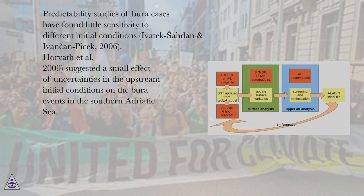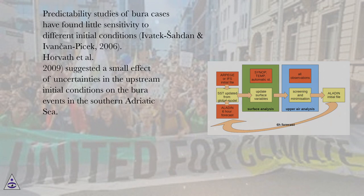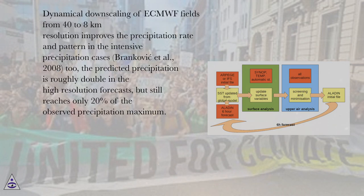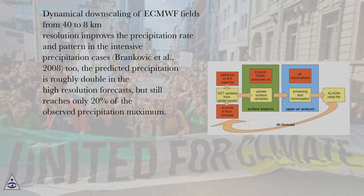Predictability studies of Brankovic cases found little sensitivity to different initial conditions (Ivatek-Saden and Ivancan-Picek, 2006). Horvath et al. (2009) suggested a small effect of uncertainties in upstream initial conditions on bora events in the southern Adriatic Sea. Another study of severe bora (Brankovic et al., 2007) exemplified a case of gale-force bora that was predicted with a probability exceeding 95%. Dynamical downscaling of ECMWF fields from 40 to 8 km resolution improves the precipitation rate and pattern in intensive precipitation cases (Brankovic et al., 2008); the predicted precipitation is roughly double in the high-resolution forecasts, but still reaches only 20% of the observed precipitation maximum.